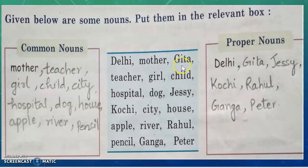Then Gita — Gita is a name of a particular book or a girl, so it is a proper noun. Teacher is a common noun because teacher can be anyone — it can be a sir, it can be a madam. Next one is girl — girl is a common noun because girl can be anyone; it can be a Rima, Seema, Gita — all the girls.